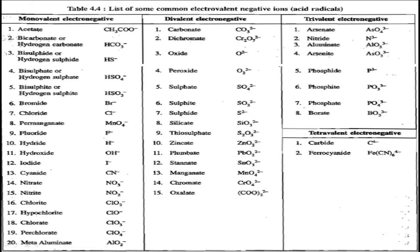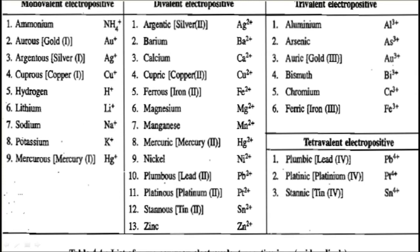Some essential electronegative radicals are given here. These lists help to write the molecular formula of compounds, so copy these all in your notebook and practice them to write molecular formulas effectively and efficiently. Some electropositive radicals with valency and symbol are also given — these are most essential to write molecular formula, so copy and practice.